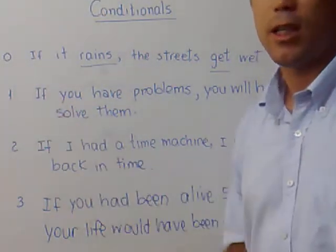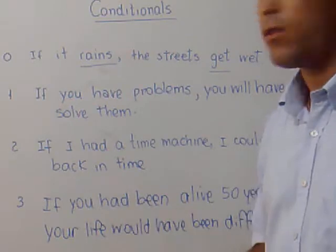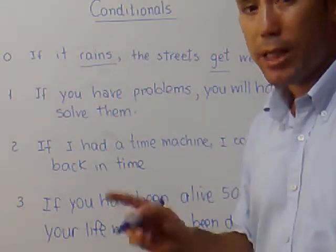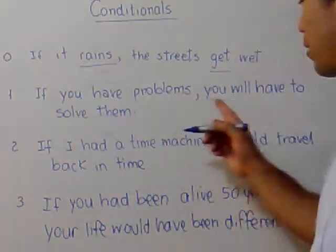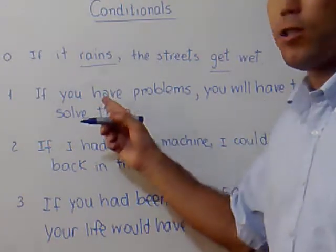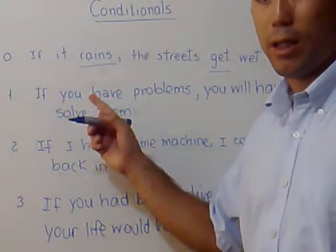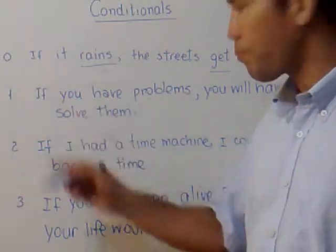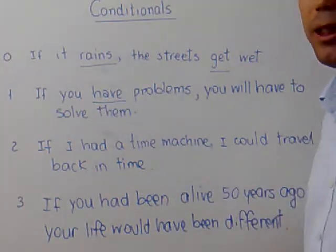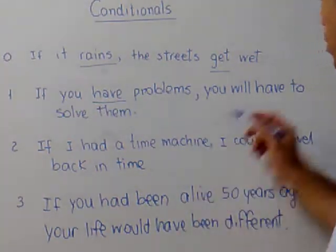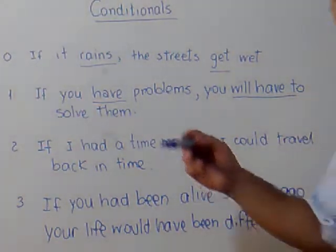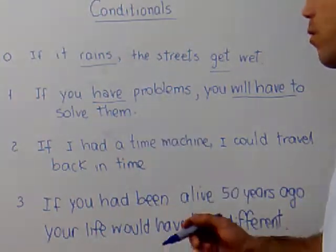The first conditional is called the present real conditional — real because something will happen in the future if a condition happens at present. So I use present in the condition clause and future in the consequence clause.